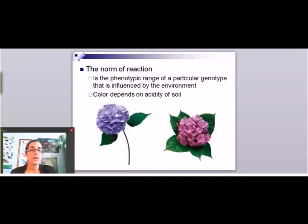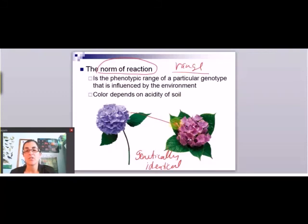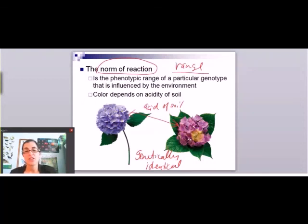Some environmental influences create what's called a norm of reaction — a range of phenotypes that will occur with a particular genotype. The classic example is these flowers: they're genetically identical but show very different colors. The difference is the norm of reaction based on soil acidity. At one range of pH you'll get one color, towards the other range you'll get a different color, and anywhere in between based on acidity. The norm of reaction is the range of phenotypes you can get based on a particular environmental influence.